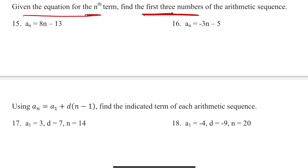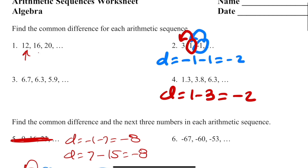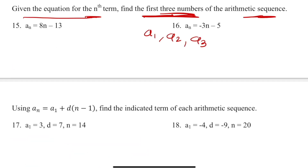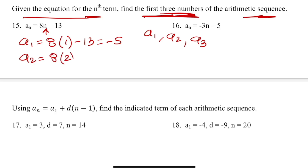For problem 15, given the equation for the nth term, find the first three terms — a sub 1, a sub 2, and a sub 3. For a sub 1: 8 times 1 minus 13 equals negative 5. For a sub 2: 8 times 2 minus 13 equals 16 minus 13 equals 3. For a sub 3: 8 times 3 minus 13 equals 24 minus 13 equals 11. Those are the first three values.